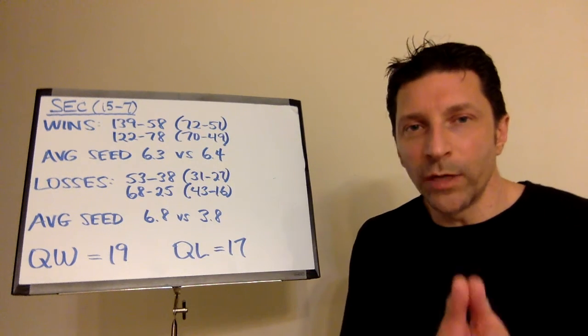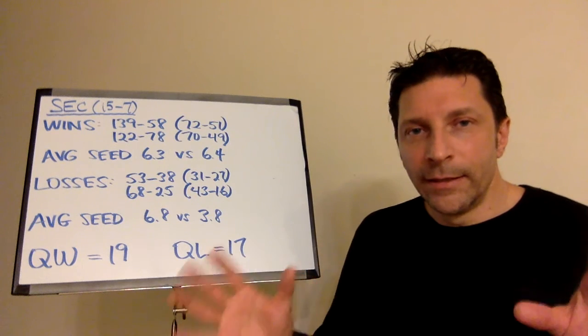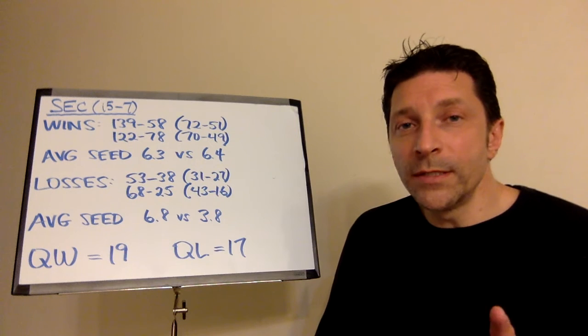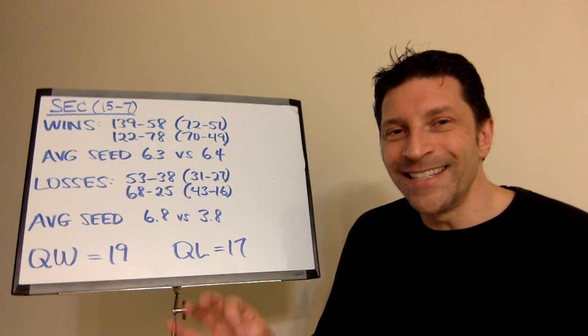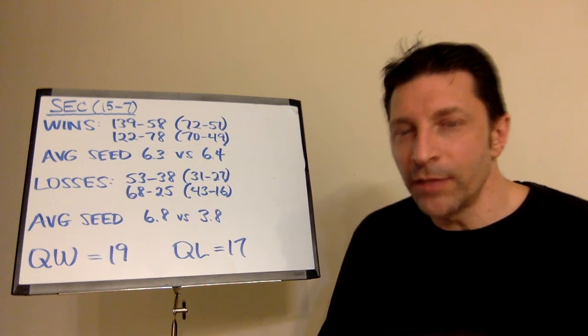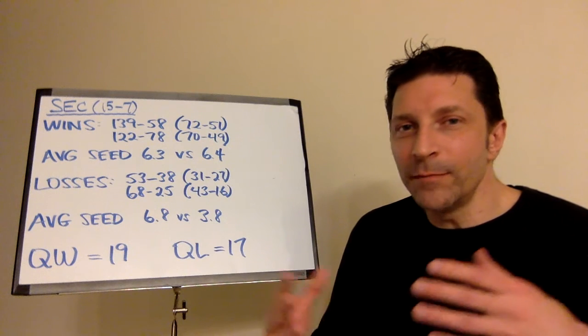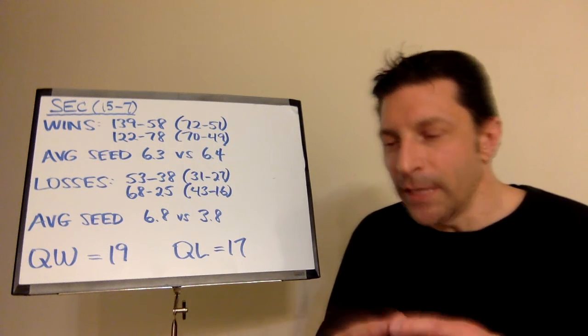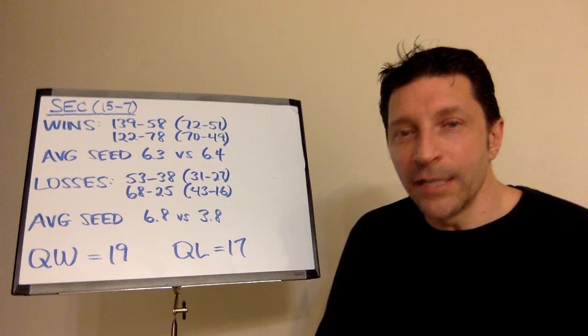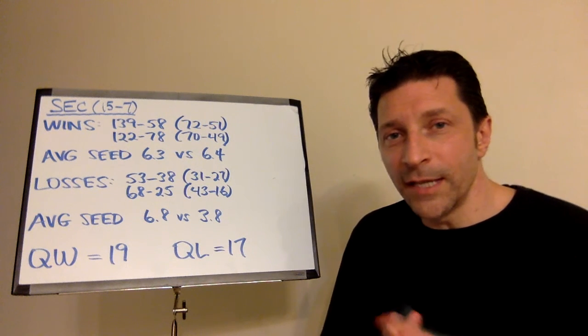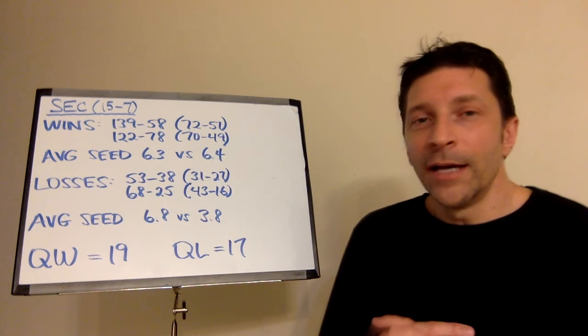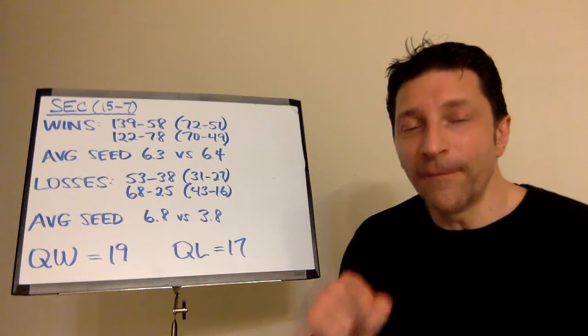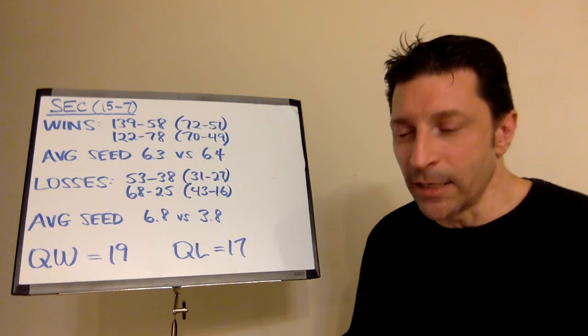Different situation here. Alabama defeats Wisconsin. Bama, the 1 seed in the SEC. Wisconsin, a 6 seed in the Big 10. So, that has to be adjusted. That's not the same type win as defeating Clemson. You defeated a 6 seed in the Big 10. So, that has to be adjusted. It's not 20 points for the SEC in that case. It's adjusted for the seeding. The difference, 1 and a 6. That's 5 points. That's a 15-point win for the SEC. That's how we did that.